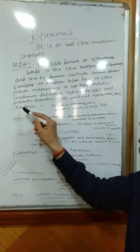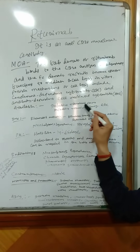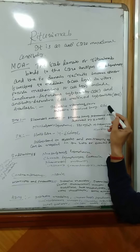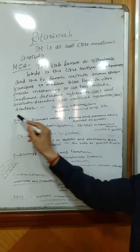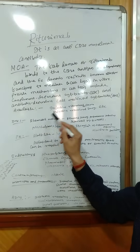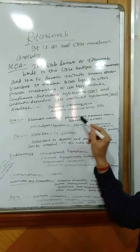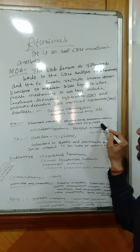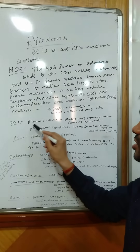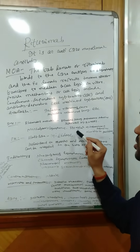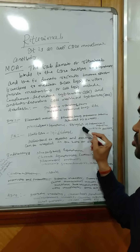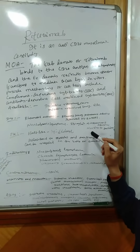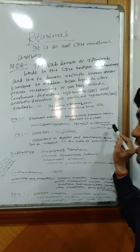Coming to the availability, it is available as injection Rituximab 500 mg and injection Rituximab 100 mg, among others, in the market. Coming to the dose, in rheumatoid arthritis, Rituximab 1000 mg intravenous infusion is given separated by 2 weeks, and in case of non-Hodgkin's lymphoma, 375 mg per meter square as intravenous infusions, according to the guidelines.